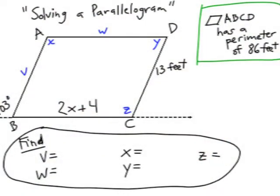We're going to solve this parallelogram problem. We know that parallelogram ABCD has a perimeter of 86 feet - the distance all the way around all four sides. We notice that side CD is 13 feet, side BC is 2x plus 4, and we have some angles to figure out. Where do we start? Give it a shot, hit pause, and come back to see if you're right.